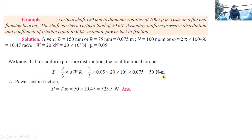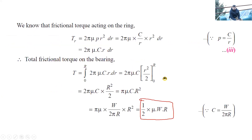So 523.5 watts of power will be lost according to uniform pressure theory. As homework, find the power loss in friction assuming uniform wear theory and try to solve it. If not possible, we will discuss it in the next class.